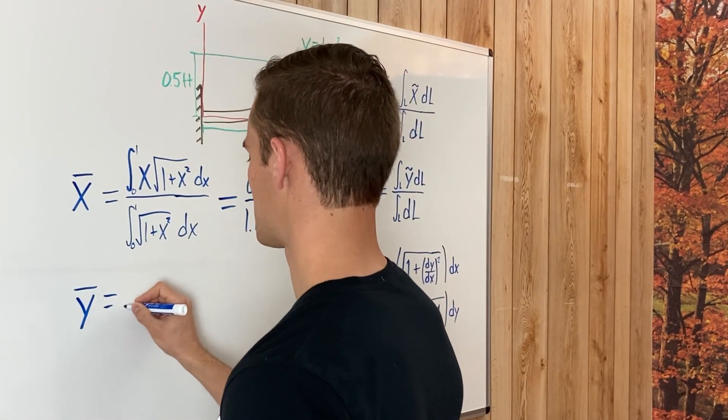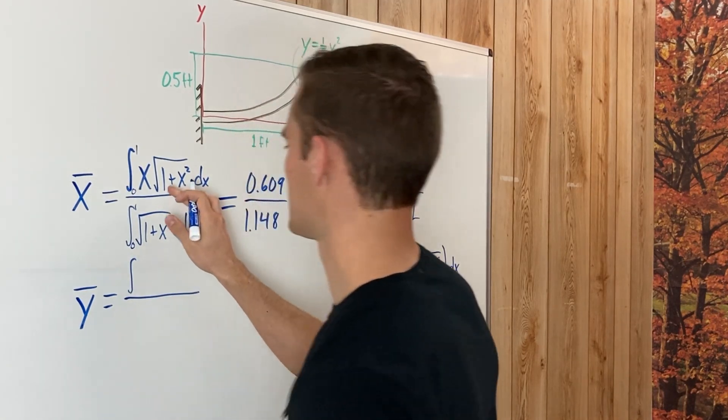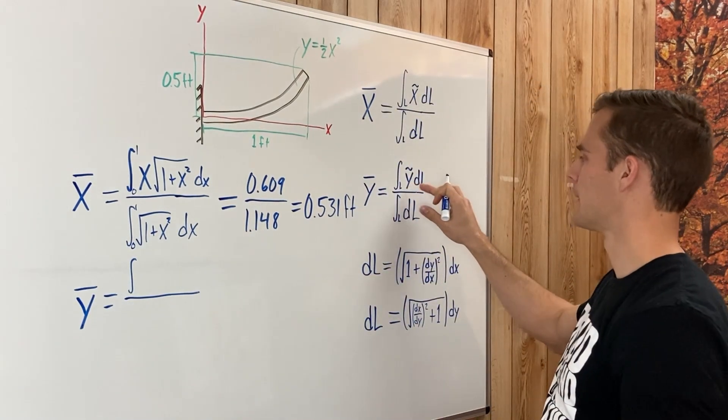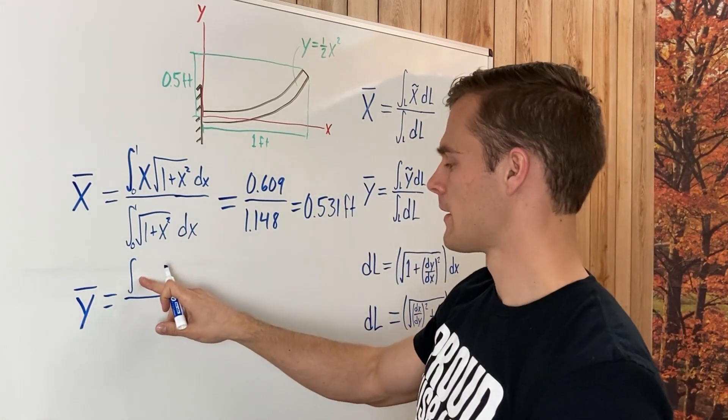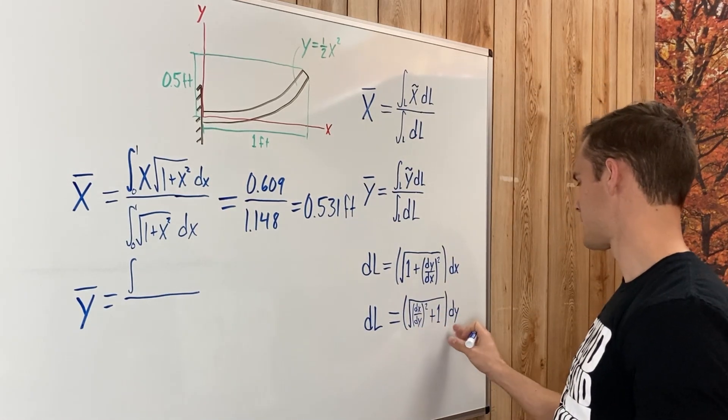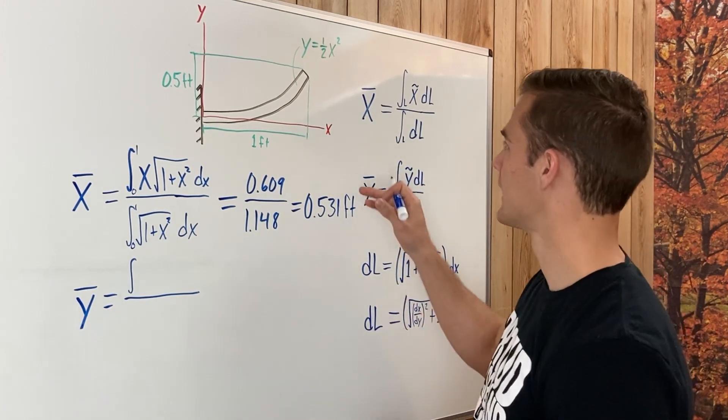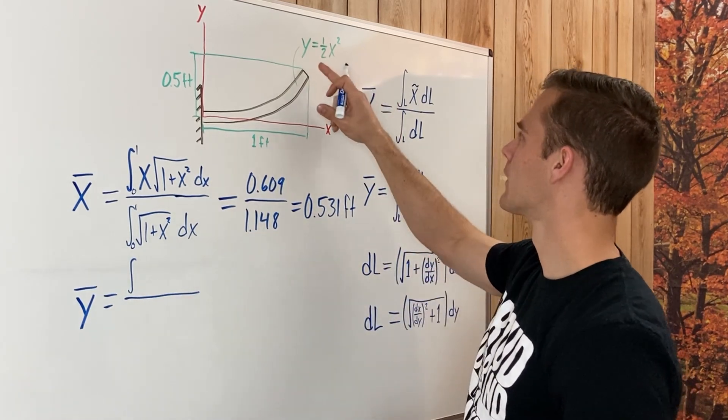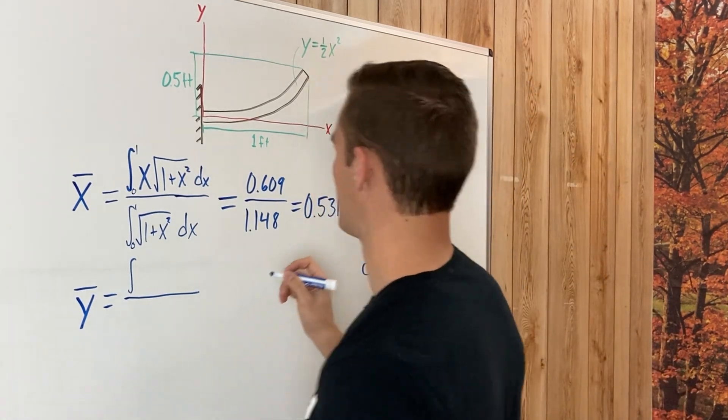Now our y bar is going to be very similar with a little bit of difference, the top integral. So our equation here is y tilde, and so that would be y in here. And to do that, we would need to use this equation so that we could integrate it with respect to y. But an easier way to do that is instead of plugging in y there for y, we know that y equals 1 half x squared, so we can just plug that into it.